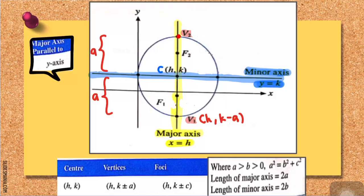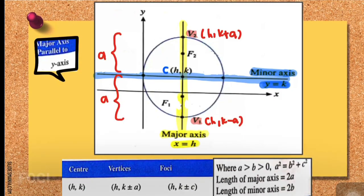For V2, the x-coordinate is still h — it doesn't change. However, the y-coordinate has gone up as much as distance a, therefore the y-coordinate is k plus a. So now we are finished with the coordinates of V1 at (h, k minus a) and V2 at (h, k plus a).